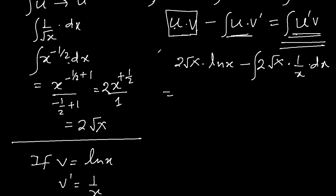2 square root x, let me separate this part, 2 square root x, ln x is finalized, but here minus 2, and this can cancel, square root x and x cancel, so we'll have square root x here now. So 2 is outside, because it's a constant, I will not touch it, but I'm left with 1 over square root x dx.